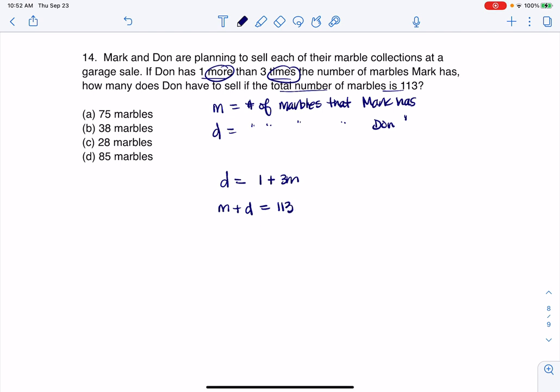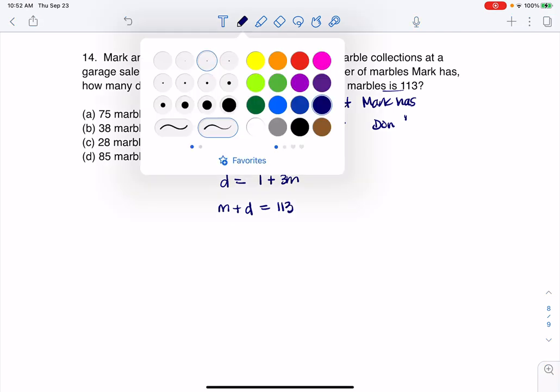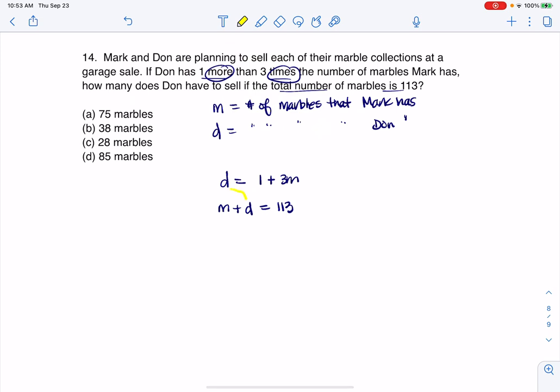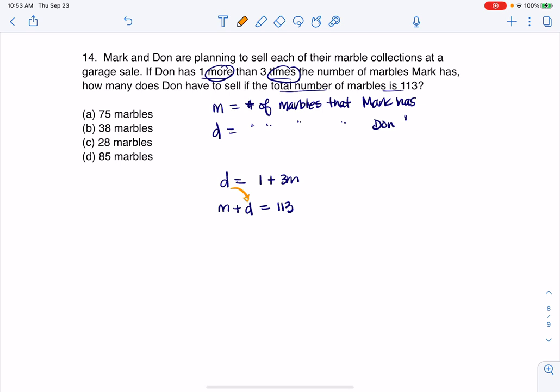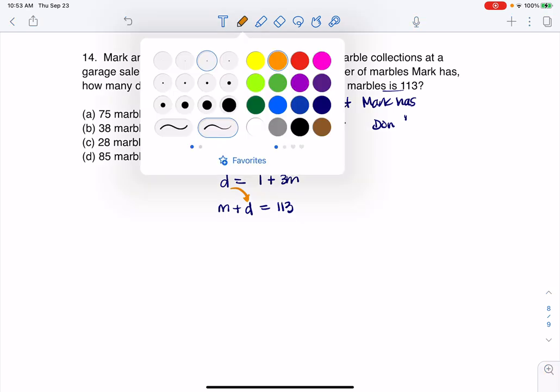So I've got my two equations and my two unknowns. And what I'm going to do here is I'm going to substitute D into this equation so that I only have one variable and one equation, and then I can solve for M. So let's do that.